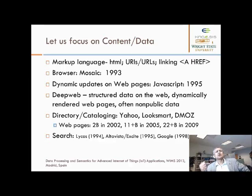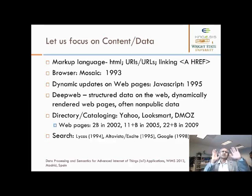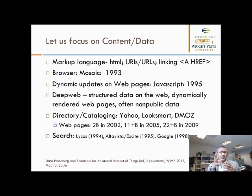Then came the Mosaic browser in 1993. Initially, web pages were static — basically a document on a server displayed within a browser. But then came the ability to create documents dynamically, to send data in XML and have a program render it in a different way. That front-end technology includes JavaScript, which came about in 1995.